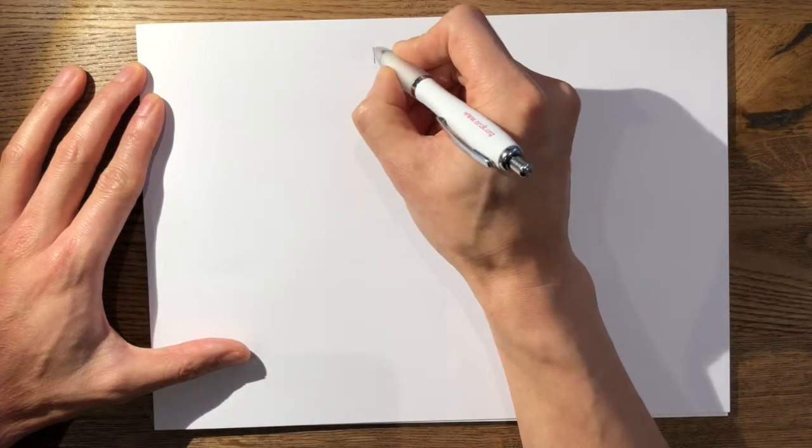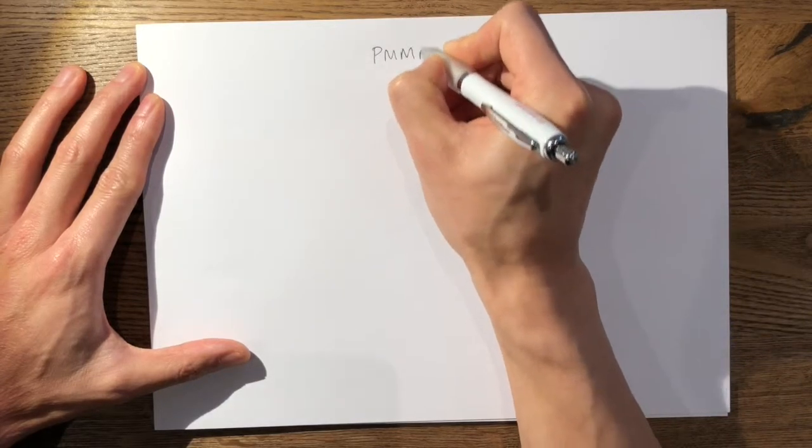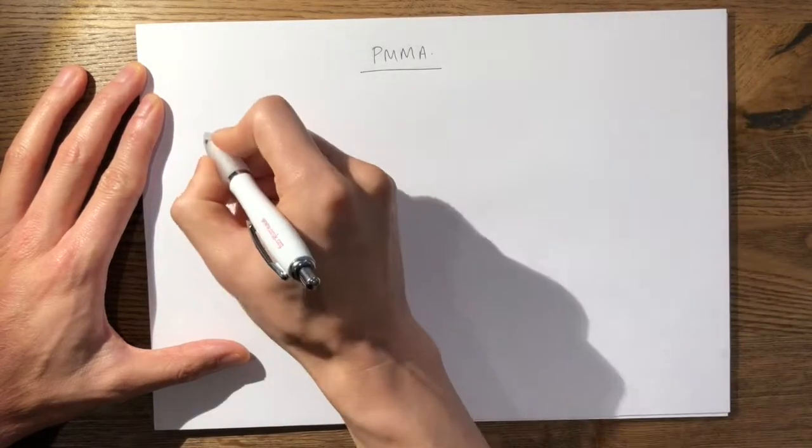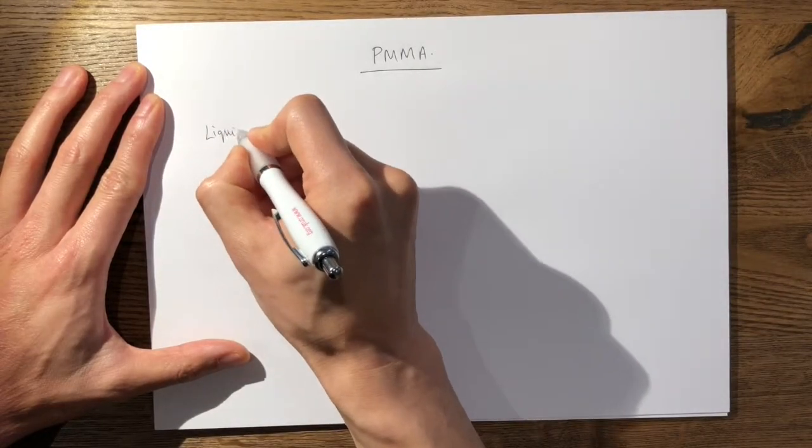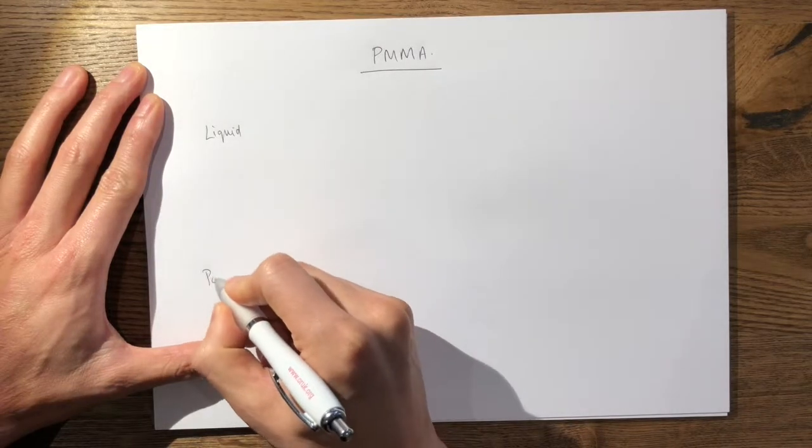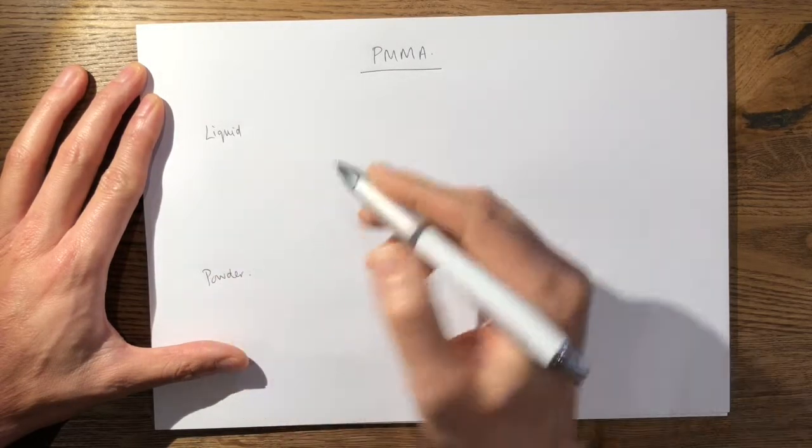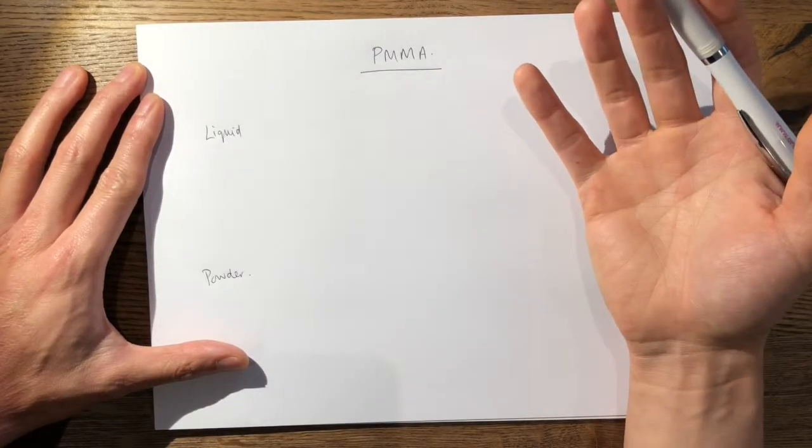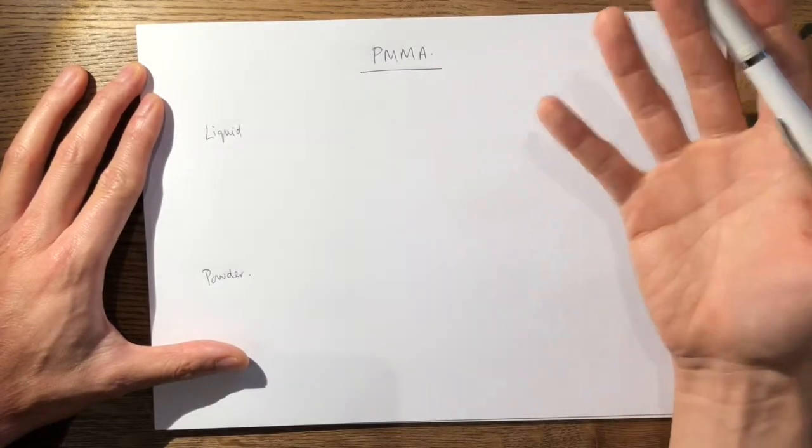So what is bone cement? In its most basic form it's polymethyl methacrylate, which is a man-made acrylic composed of a liquid monomer and a powdered polymer. These components are mixed together which causes an exothermic reaction to reach your final product.